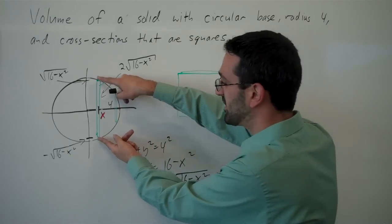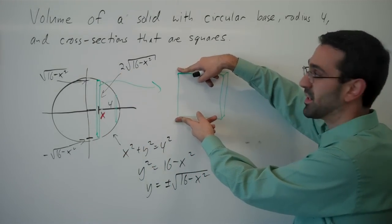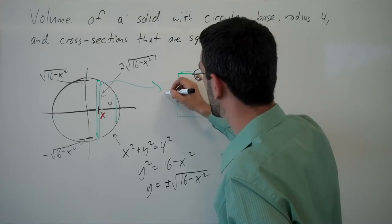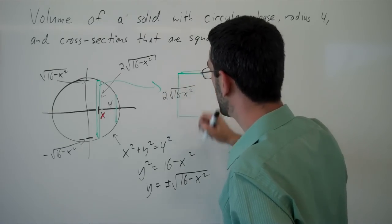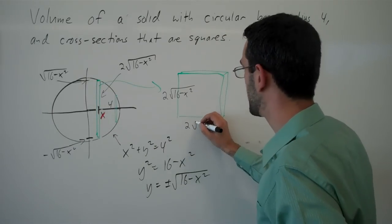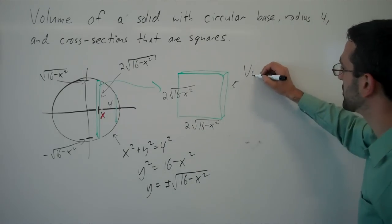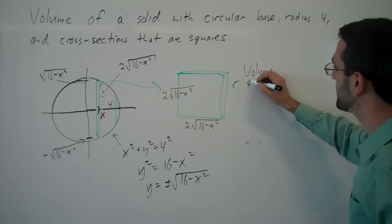So the length of this side corresponds with this side of my slice. So this is 2 root 16 minus x squared. And because it's a square, this side has the same length. So now we can write an equation for the volume of this slice.